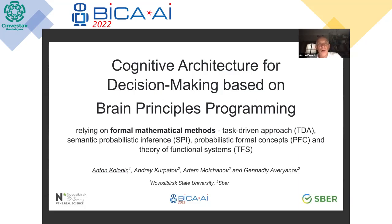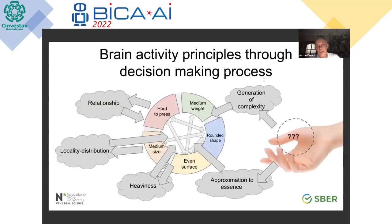This talk is about a cognitive architecture for decision-making intended for development of decision support systems. The architecture is based on principles of brain activity — brain principles programming — and relies on formal mathematical methods: task-driven approach (TDA), semantic probabilistic inference (SPI), probabilistic formal concepts (PFC), and theory of functional systems (TFS).